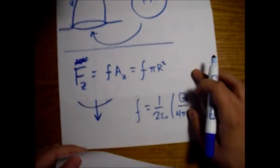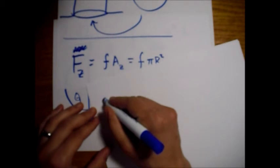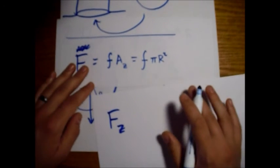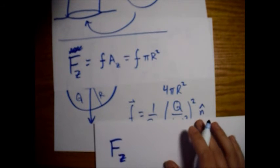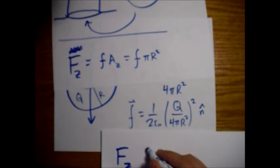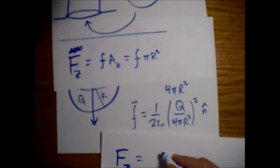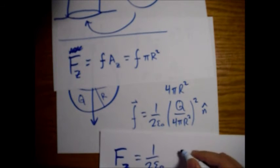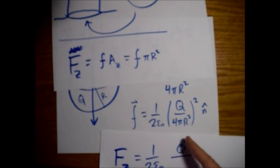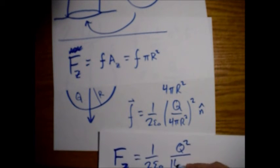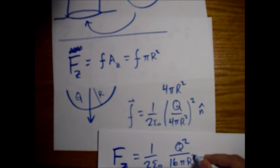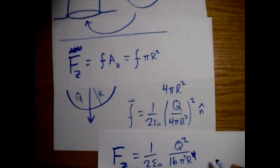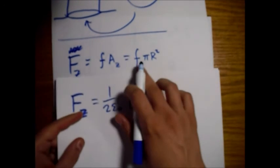So what we want to do, all we're going to do is plug in the f now. So we want to know the z component of this force. And so all we have is this f here: one over two epsilon naught, Q squared. I'm going to go ahead and square this out, so sixteen pi squared R to the fourth. All right, we're squaring it out. So there's the f.